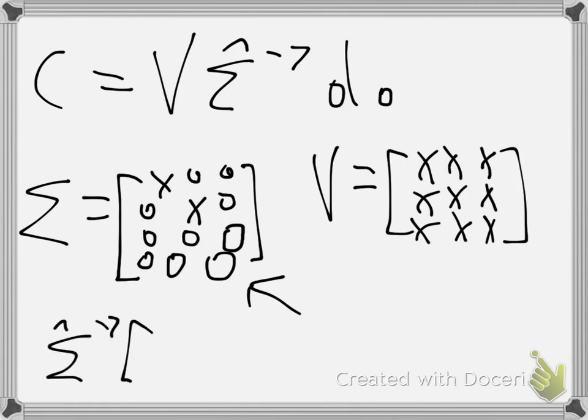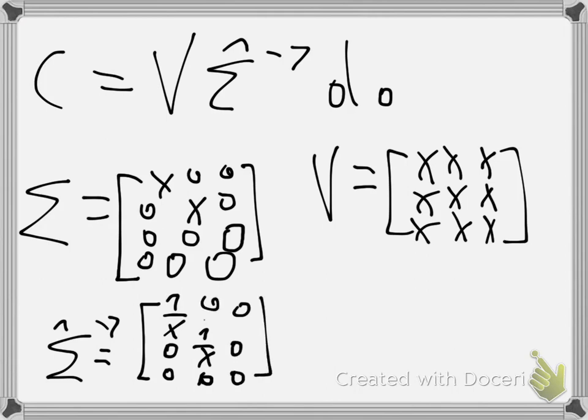You will have 1 over the first singular value, 1 over the second, and here we will have zero. We will be able to multiply the pseudo-inverse with V. That's the goal of Σ̂—you remove rows that have only zeros.